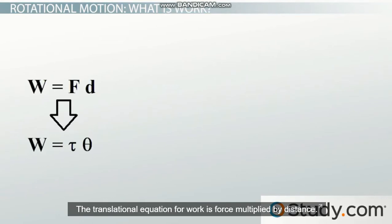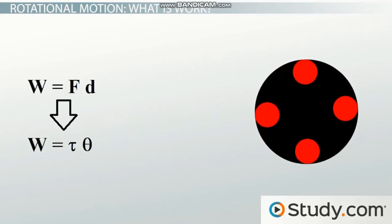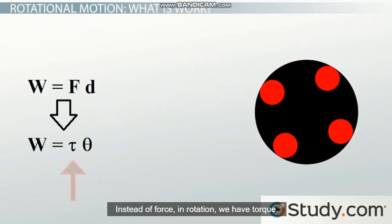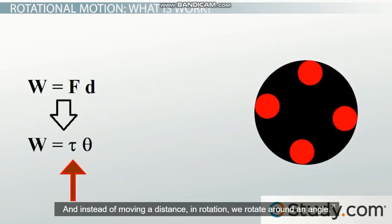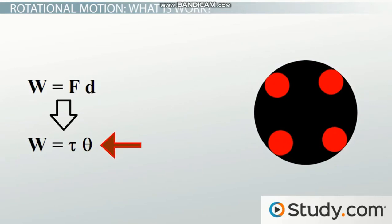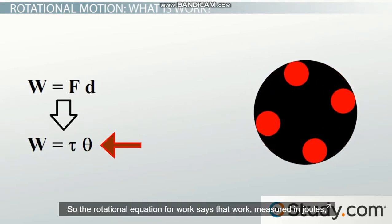The translational equation for work is force multiplied by distance. A greater force means greater work. But we're talking about rotation. Instead of force in rotation, we have torque. Instead of moving a distance in rotation, we rotate through an angle.